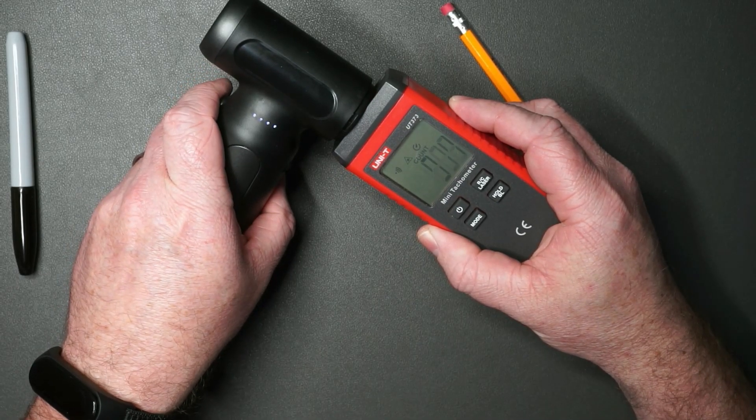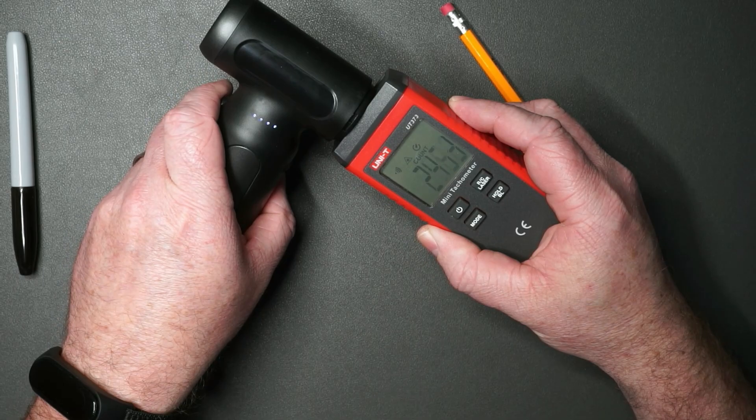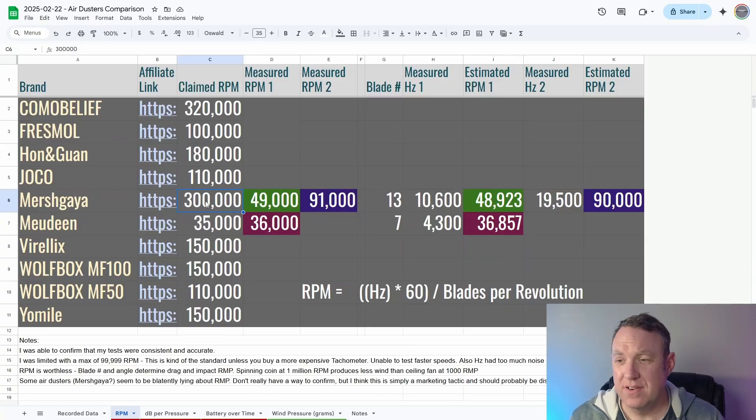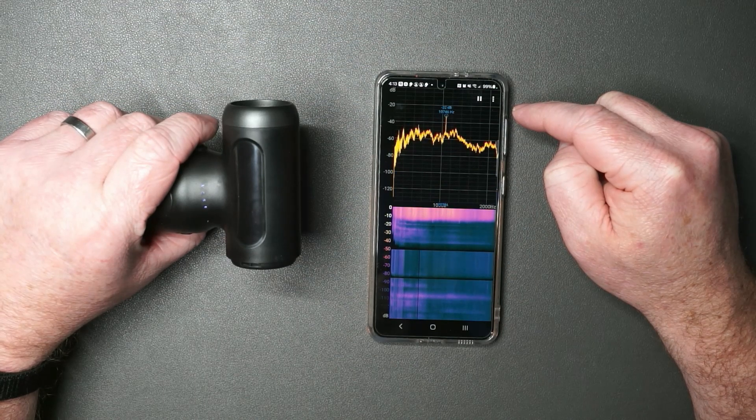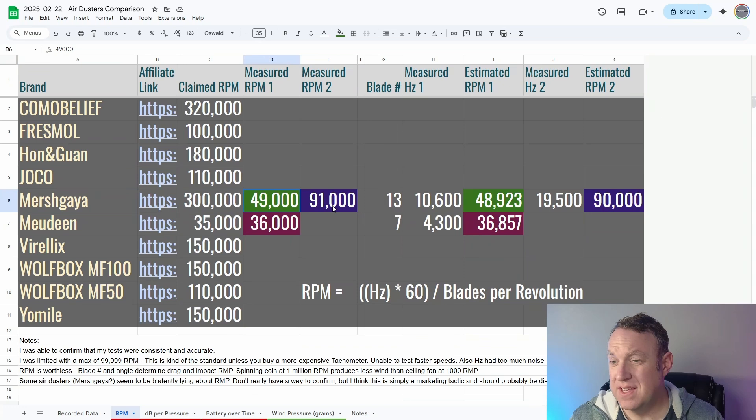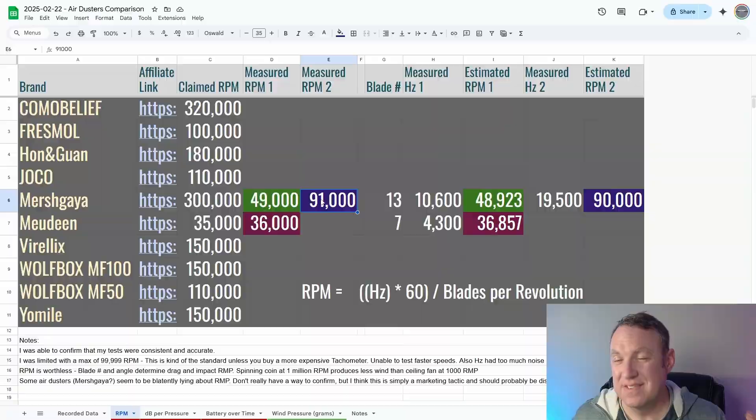And the reason I know this is accurate, or at least I think this is accurate, is I actually got a formula for calculating the RPMs of a fan by getting the hertz or the audio frequency of the blades as it spins, multiply that by 60, divide that by the number of blades that it has. And you can see here on my spreadsheet the difference between this meter and what I got by measuring the tone of the blade fans, and they're both pretty consistent. So I am confident that this tachometer is reliable and accurate.